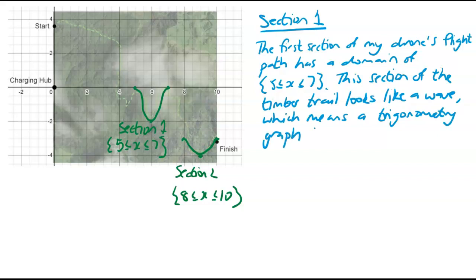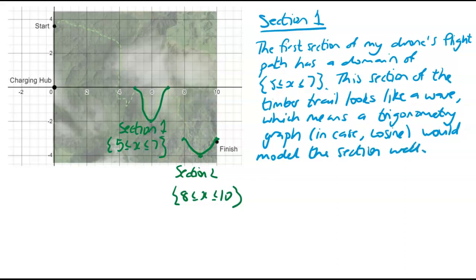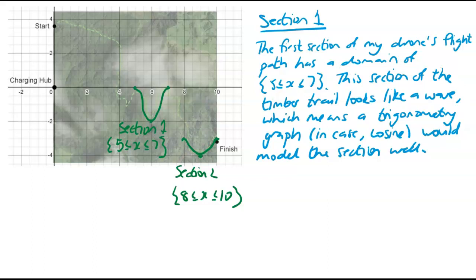This section of the timber trail looks like a wave, which means a trigonometry graph - and I'll be specific, in this case a cosine graph - would model the section well. You can see I'm using phrases like 'timber trail' and 'drone's flight path', thinking of the context of the scenario and linking it to the features of my graph - that was the domain and the fact it looks a little bit like a wave. The other important features I want to mention before the rest of my analysis are the maximums, because trigonometry graphs always have those turning points.